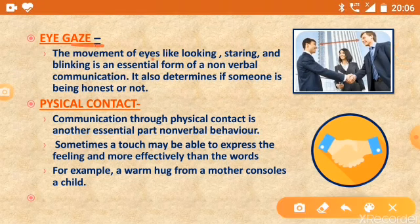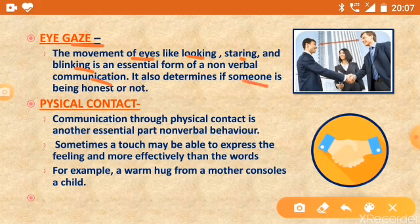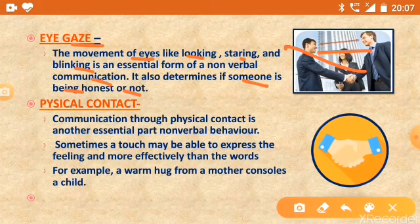Now come to the next element: eye gaze. The movement of the eye — like looking, staring, and blinking — are essential forms of non-verbal communication. It also determines if someone is being honest or not. The movement of our eyes and the eye contact we make tell many things. If we establish direct eye contact, it shows that we are very confident. With the help of our eyes, we can determine if someone is honest or not.